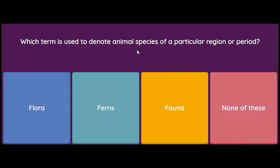Which term is used to denote animal species of a particular region or period — flora, ferns, fauna, or none of these? We call it fauna, so the answer is fauna.